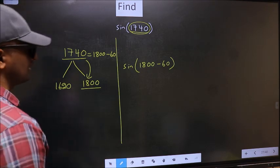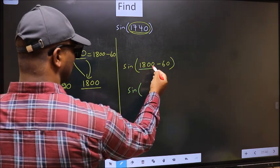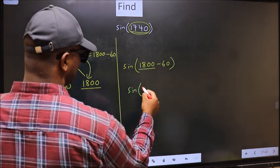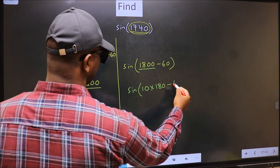Next. Sine. In place of 1800, now we should write 10 into 180 minus 60.